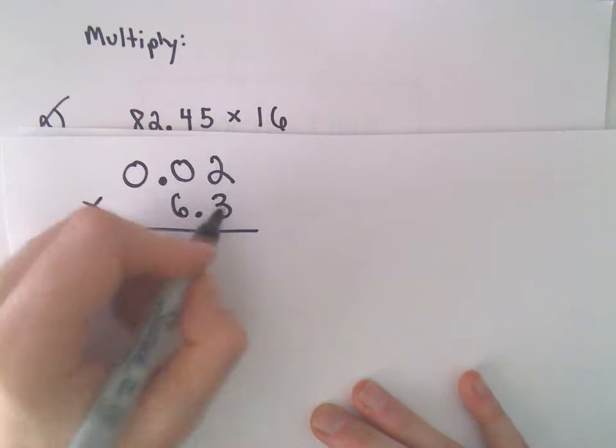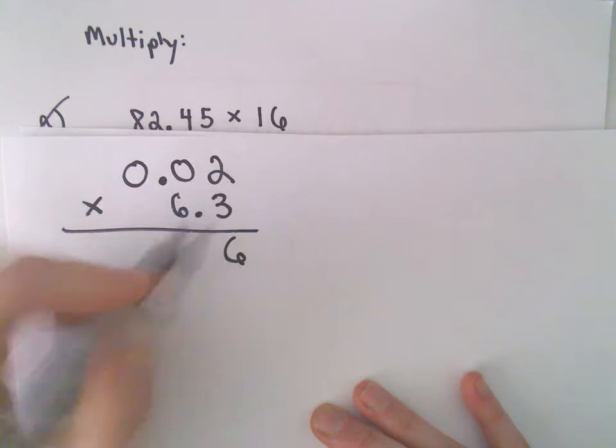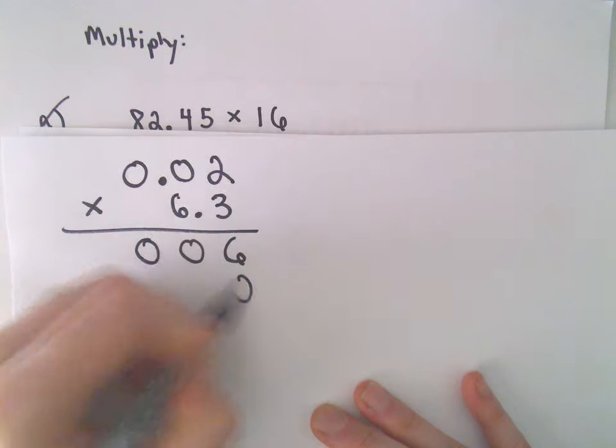Let's see, 3 times 2 is going to be 6. 3 times 0 is 0. 3 times 0 is 0. I'll put my 0 down.